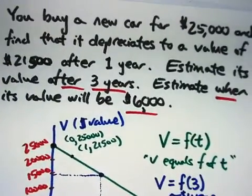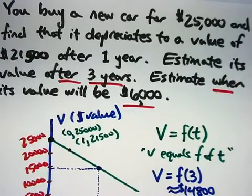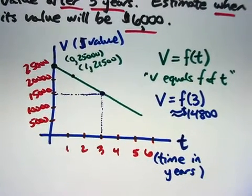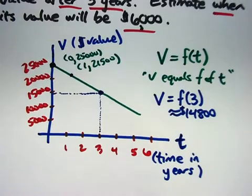In the previous video, we considered an example with depreciation. You buy a new car for $25,000. Its value goes down over time to $21,500 after one year. So we're pretending now one year has gone by. Now we're going to estimate its values three years after we bought it, and also estimate when its value will be $6,000. And I took an approach to say, well, let's just try to make a graph of the situation first.